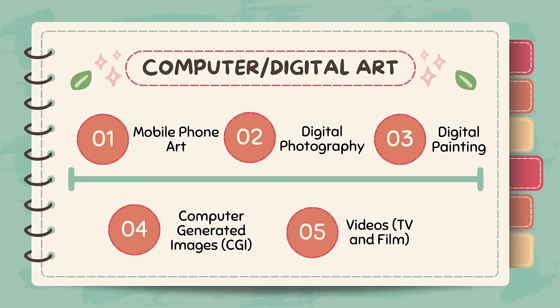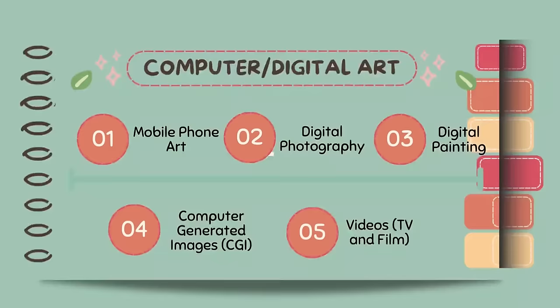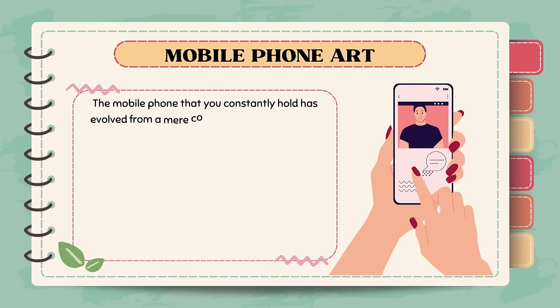Under computer or digital art, we are also going to explore the following types: mobile phone art, digital photography, digital painting, computer-generated images or CGI, and even videos such as TV and film.